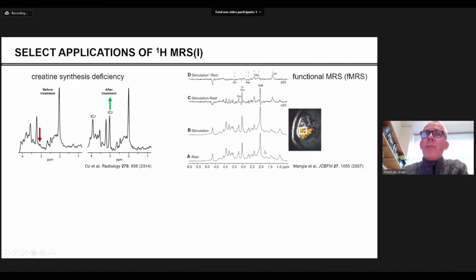A more subtle example is perhaps given by Manji et al. where they studied metabolic changes during visual activation. So you get a proton spectrum before and during the activation and then the difference will tell you the signals, the metabolites that change in concentration. And lactate and glutamate are the most prominent ones.